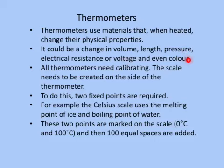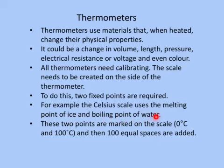All thermometers need calibrating. The scale needs to be created on the side of the thermometer. To do this, two fixed points are required. For example, the Celsius scale uses the melting point of ice and the boiling point of water.